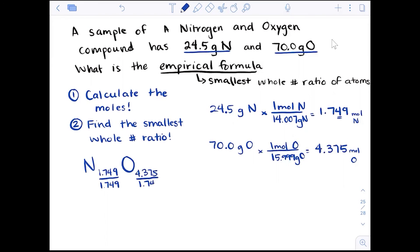By dividing by the smallest, what we can start to do is get that smallest whole number ratio. What we see with that is a nitrogen that's a 1 and an oxygen that's a 2.5. Now we're closer. Again, we can't round, but we can say that a 1 to 2.5 ratio is really a 2 to 5 ratio.